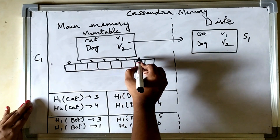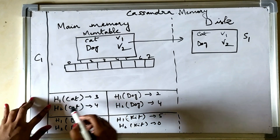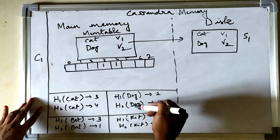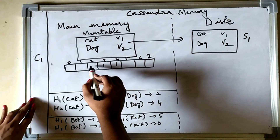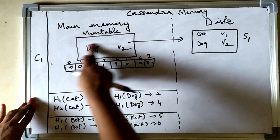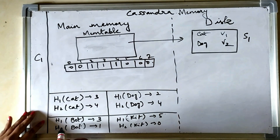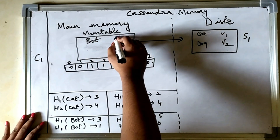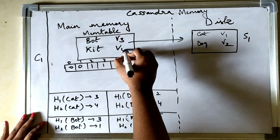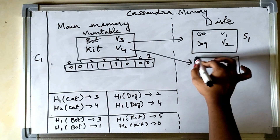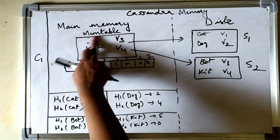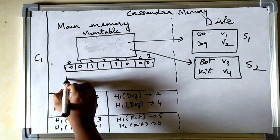The bloom filter bit array has positions 0 through 7. H1(cat) = 3 and H2(cat) = 4, so we set those bits. Then H1(dog) = 2 and H2(dog) = 4, so we set those bits as well; the others remain zero. Now the memtable is empty. We get a new write for key 'bot' with value v3, written to memtable, followed by key 'kit' with value v4. This again reaches the threshold and is flushed as SS table 2.